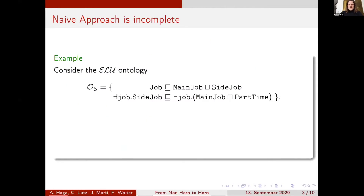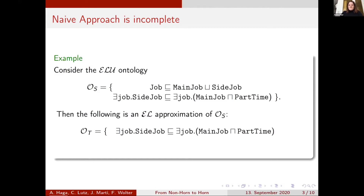Let us have a quick look at why the naive approach is incomplete. Consider this ELU ontology: our source language is ELU, which is EL with disjunctions, and in our source ontology we have two concept inclusions. The naive approach — wishing to translate into an EL approximation — simply gets rid of the disjunction, so we only keep the second concept inclusion from our source ontology in the target ontology.